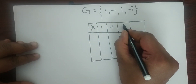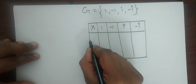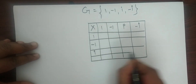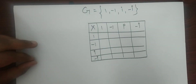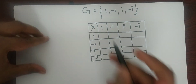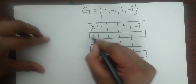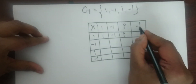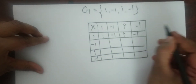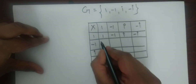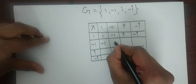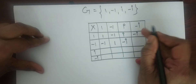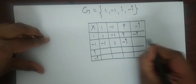The elements are 1, -1, i, -i. So it is an easy example. 1 multiplied by 1 is 1. -1 into 1 is -1. i into 1 is i. -i into 1 is -i. 1 into -1 is -1. -1 into -1 is +1. i into -1 is -i. -i into -1 is +i.